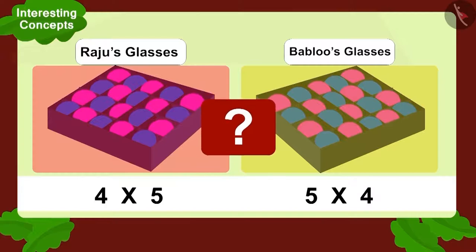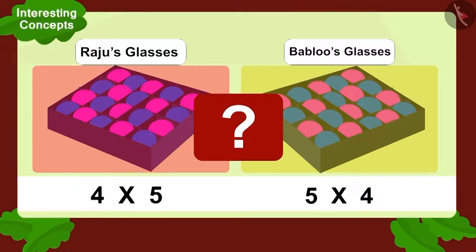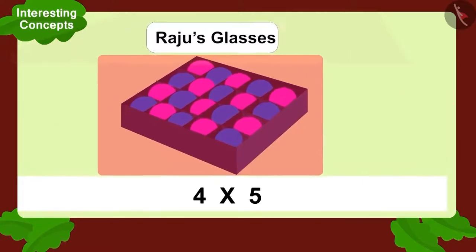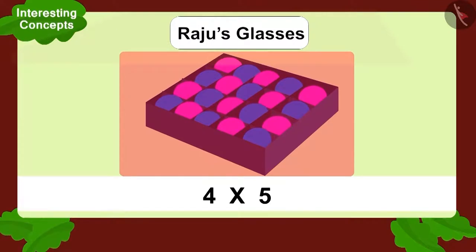Is this possible? Is the multiplication seen through Bablu's and Raju's glasses the same? Come, let's look at Raju's multiplication.